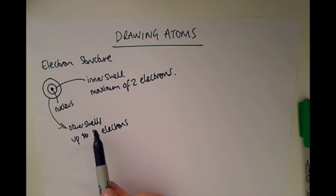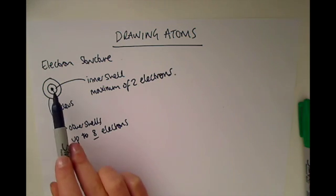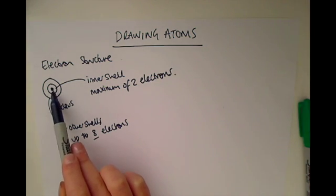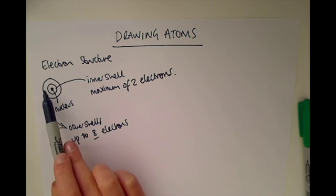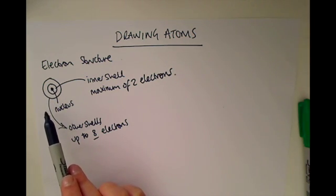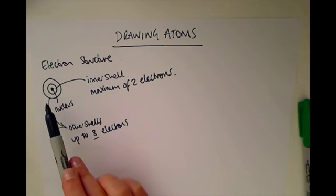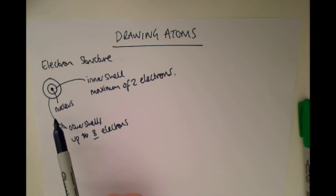The electrons fill from the inside first, so you fill up a shell before you move on to the next shell outside. That's important too. So if we were to draw an atom by its electron structure, we would need to know how many electrons are in that atom.